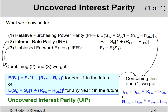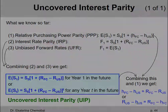This last result can also be rearranged to put everything for the US on one side and everything for the foreign country on the other side. If we move R_US to the left-hand side, it changes the sign from negative to positive. If we move H foreign country from the left to the right, it changes the sign to negative. We then get R_US minus H_US equals R_FC minus H_FC. This last formula has a name.